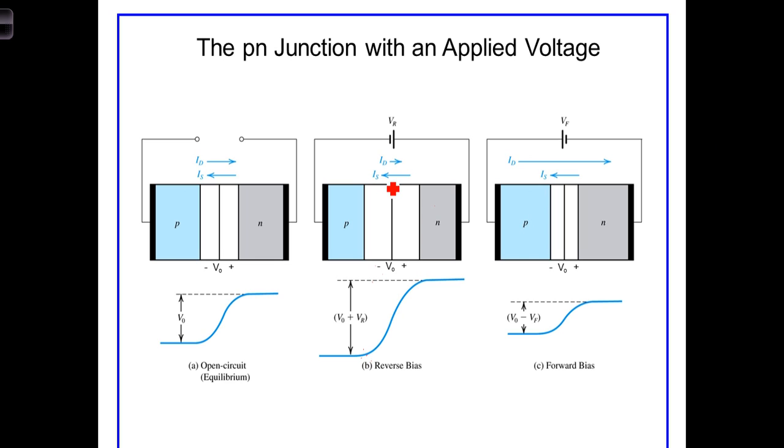The net current is then I-sub-S, also referred to as the saturation current, which is very small and is due to thermally generated minority carriers being drawn across the junction voltage.